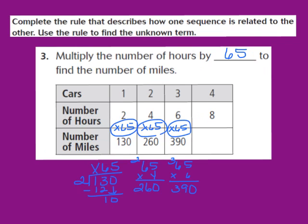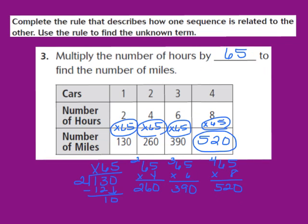Our next step is to multiply 8 by 65 to find the unknown term. Taking 65 times 8: 8 times 5 is 40, write the 0 and regroup the 4; 8 times 6 is 48, and 48 plus 4 is 52. So 8 times 65 takes us to 520. I'll write down 520 as the missing term. For 8 hours, the number of miles would be 520, based on the rule: multiply the number of hours by 65 to find the number of miles.